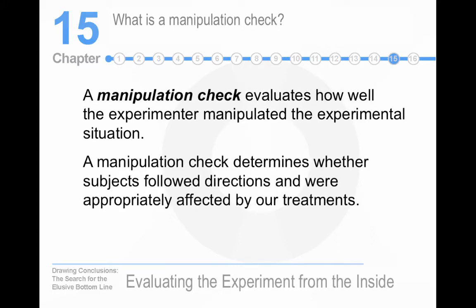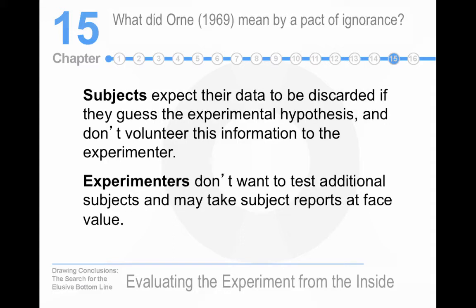What is a manipulation check? Did your experiment manipulate and measure what you thought you were manipulating and measuring? That seems to be a reasonable thing to check. Oren comes up with his idea of a pact of ignorance, where people who are participating think their data is going to be discarded, and experimenters take the people's reports at face value. This is really a demand characteristic issue.